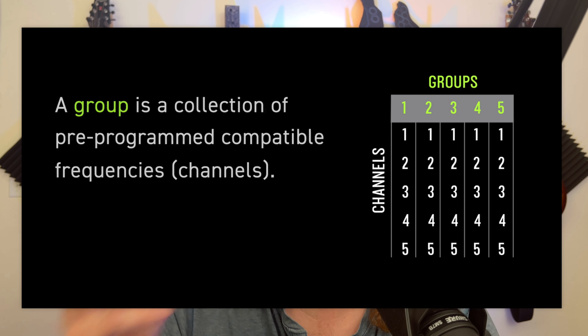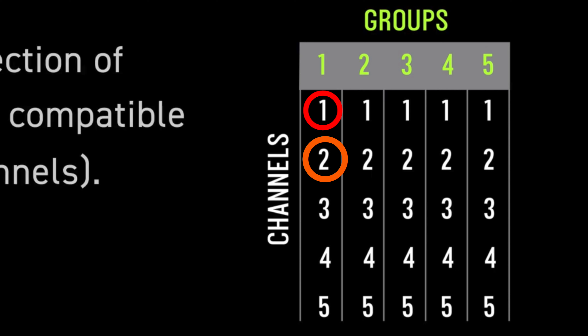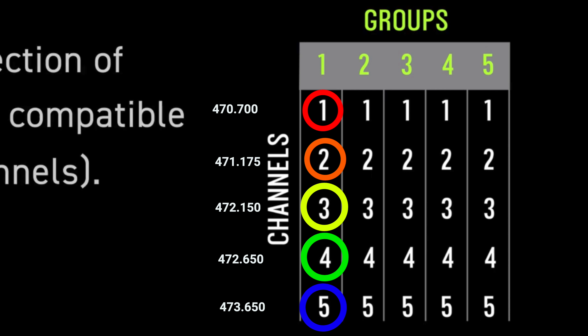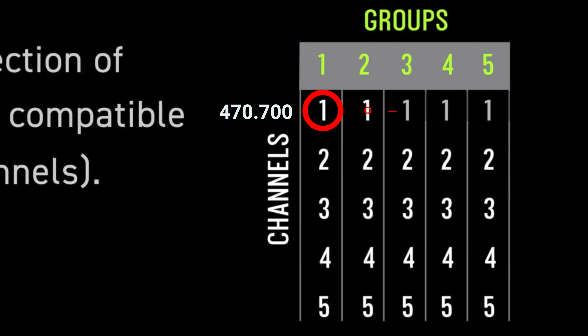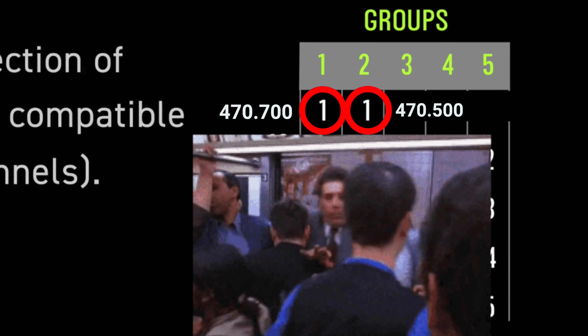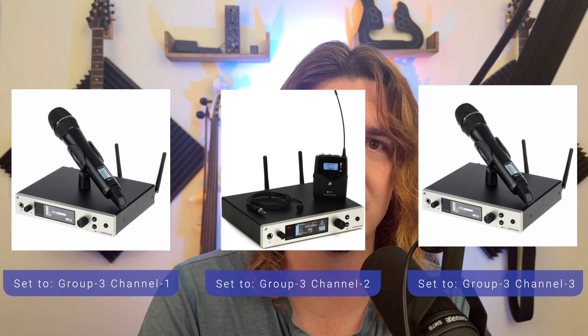That's what groups are meant to do. Groups are basically a collection of pre-programmed compatible channels. So if you have five wireless units all set to group one — channel one, two, three, four, and five — they are spaced out far enough that they won't get interference. However, if you have one set to group one channel one and another to group two channel one, those frequencies are right next to each other and will cause the wireless to work less efficiently. When I first started using groups, I was setting different people to different groups — that's not what you're supposed to do. You're supposed to find which group has the most available frequencies and then assign everyone to different channels within that same group.